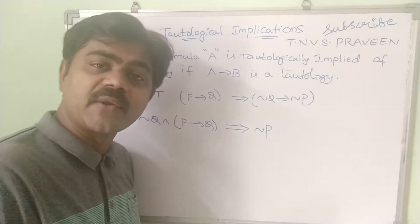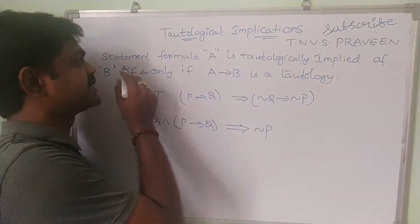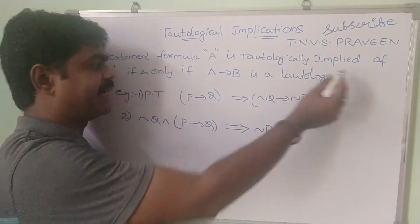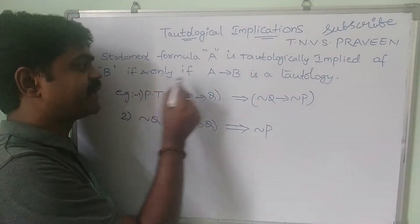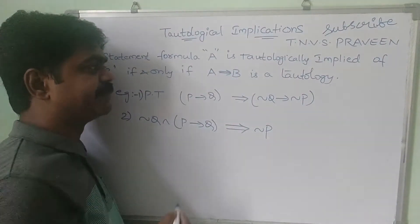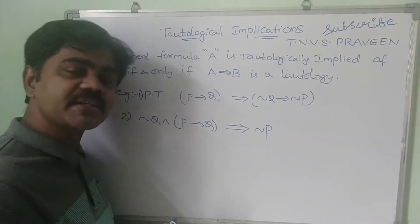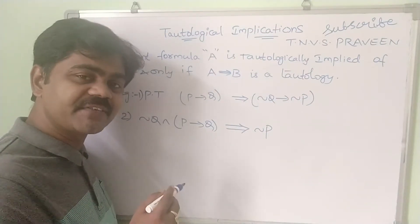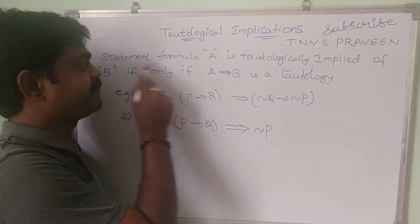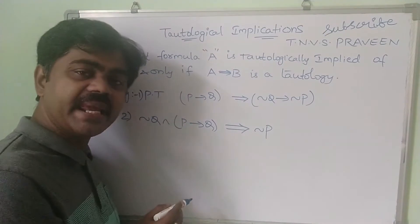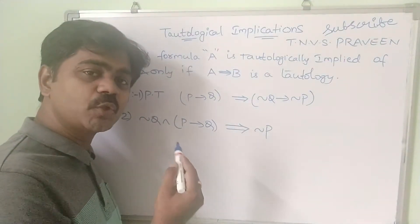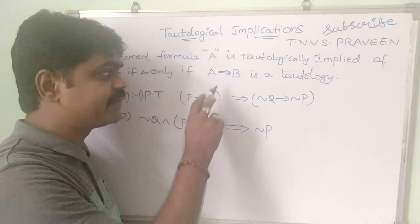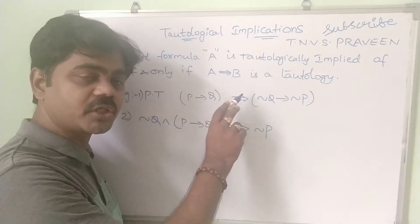Now the definition: statement formula A is tautologically implied by B if and only if A implies B is a tautology. So statement formula A is tautologically implied by B if and only if A implies B is a tautology.